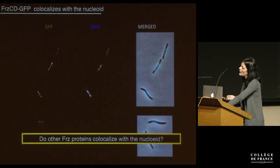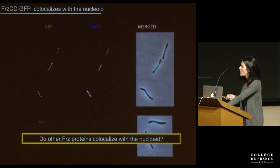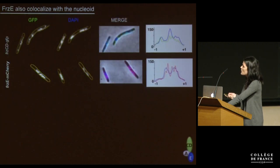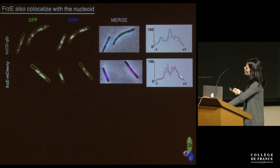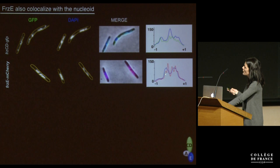We then wondered whether other Frz proteins co-localize with the nucleoid as well. So we co-localized FrzE, which is the histidine kinase of the pathway. When we generated the FrzE-mCherry fusion, FrzE also localized with the nucleoid. Here we have the fluorescent profiles of FrzCD in green, FrzE in red, and the nucleoid in blue.